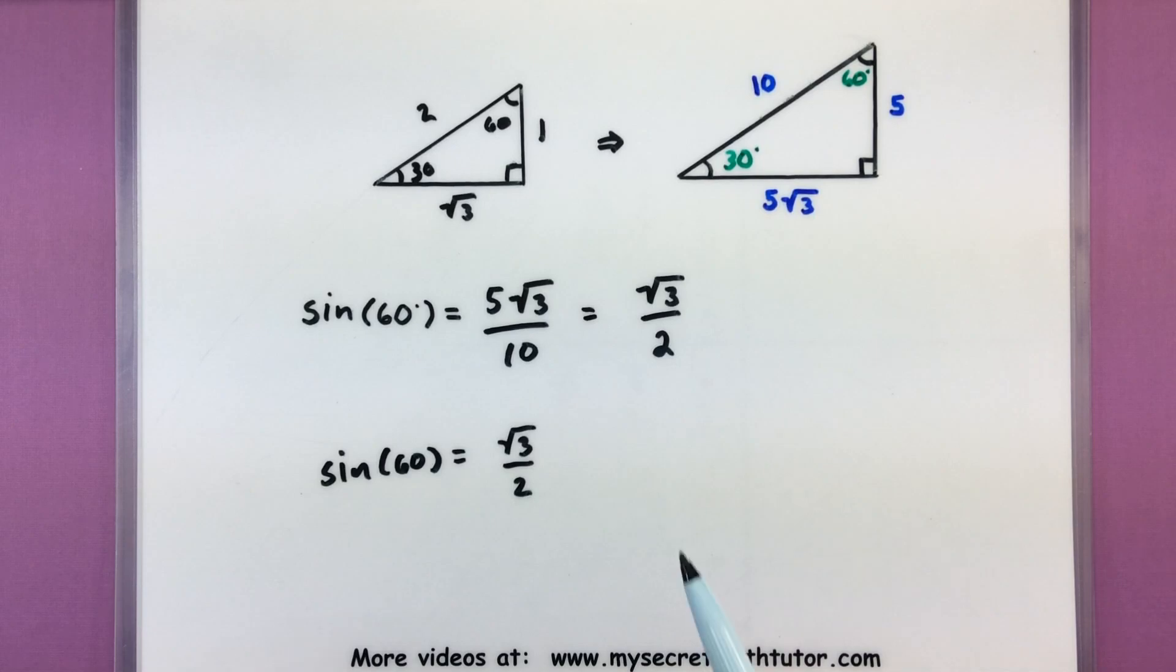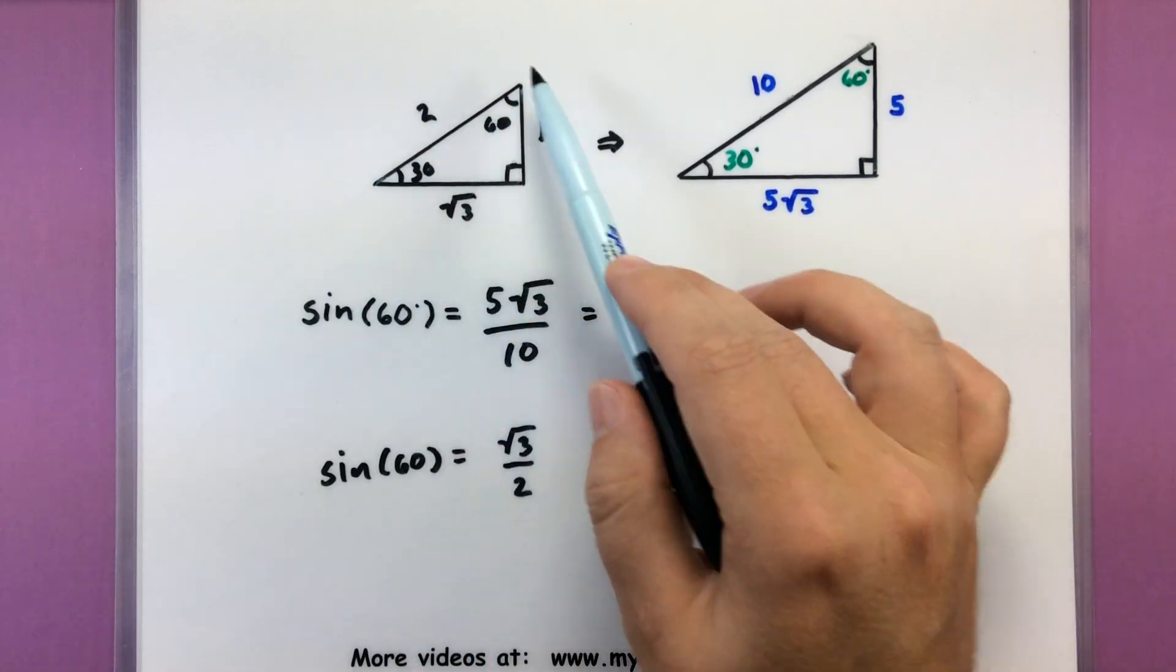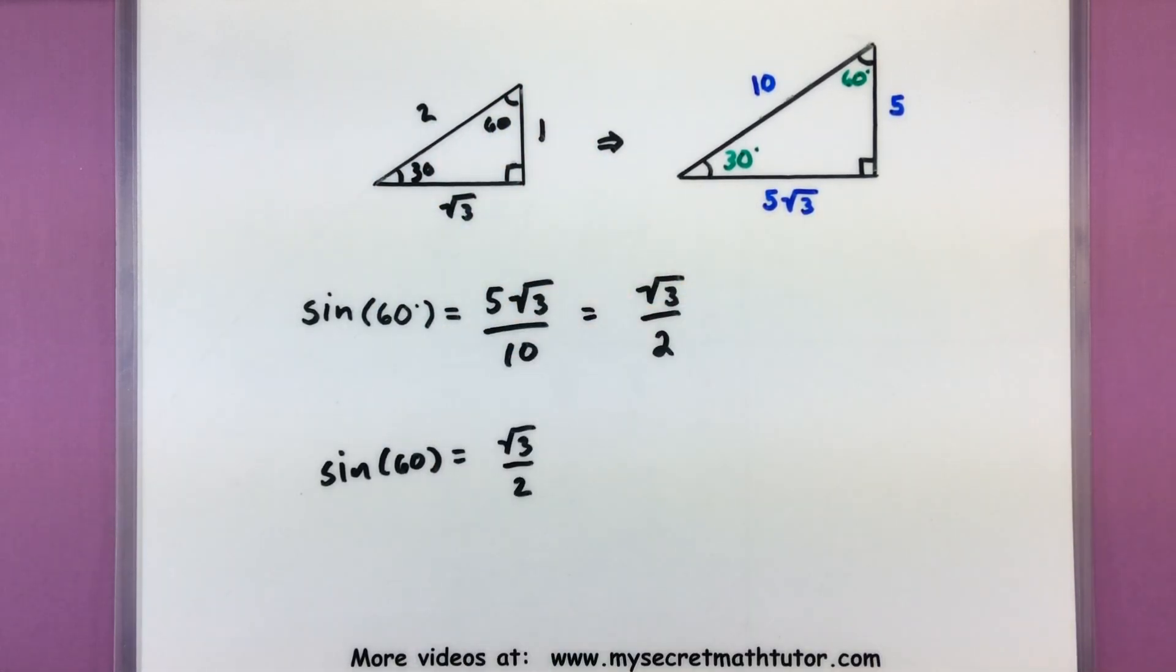That's why you can save yourself some time by memorizing these key values or key sides on the 30-60-90 and the 45-45-90. All right, hopefully that helps out. If you'd like to see some more videos, please visit MySecretMathTutor.com.